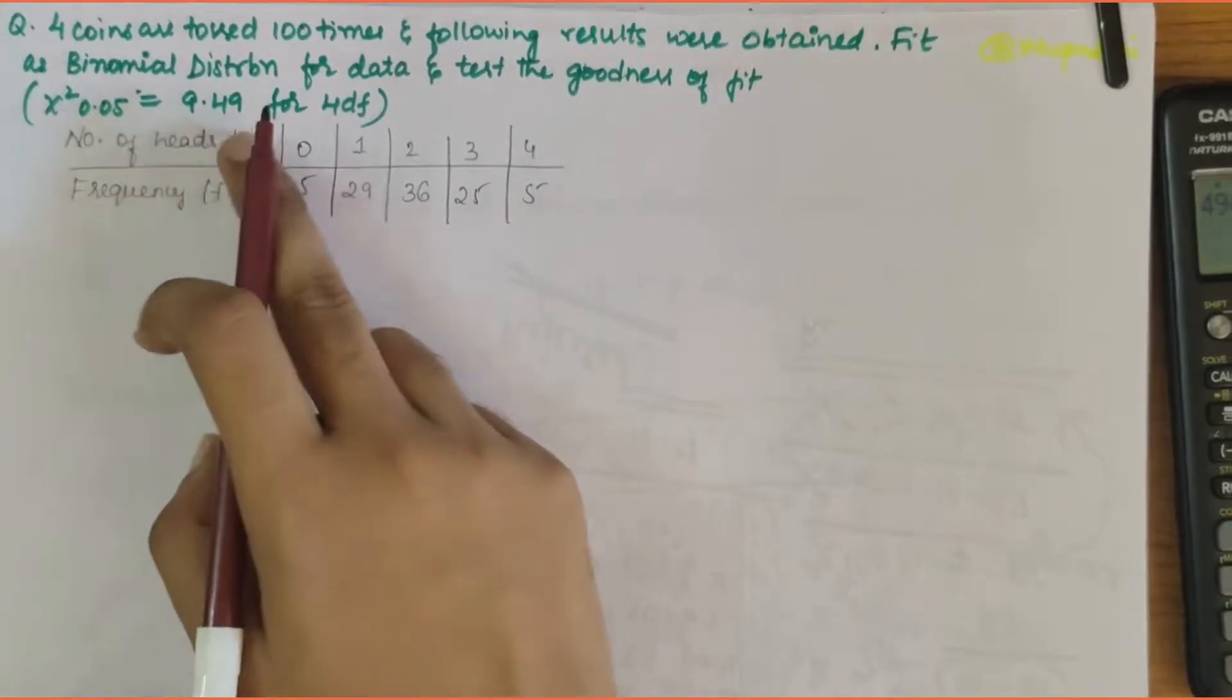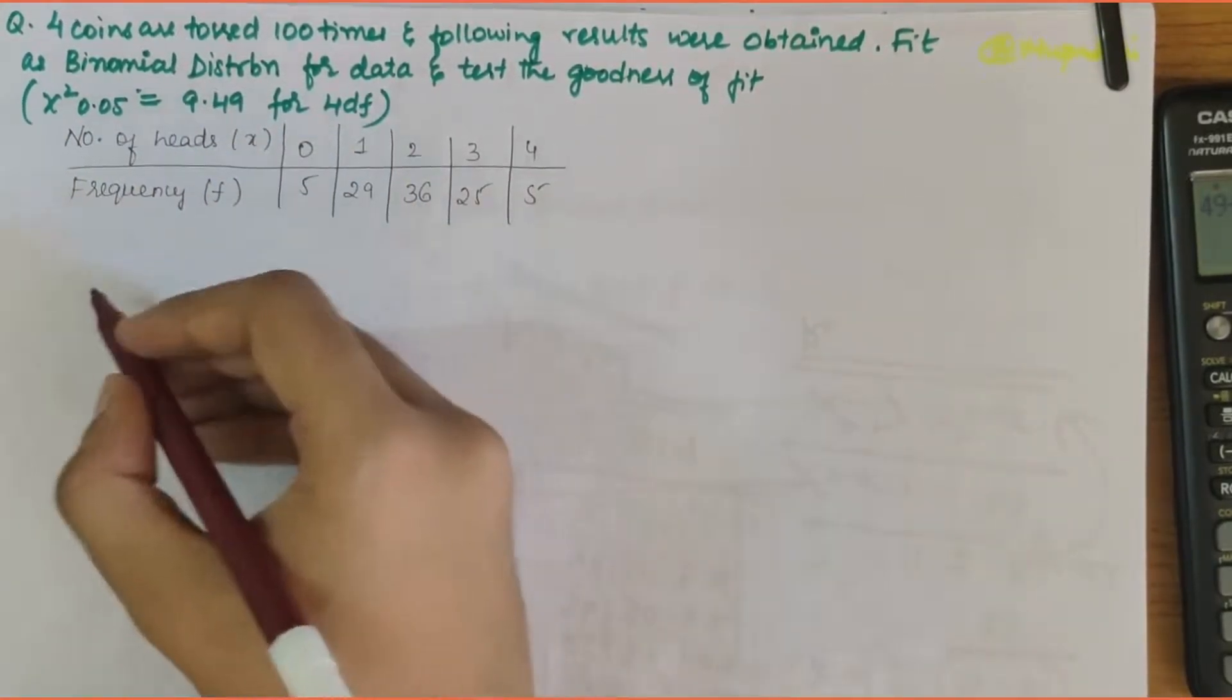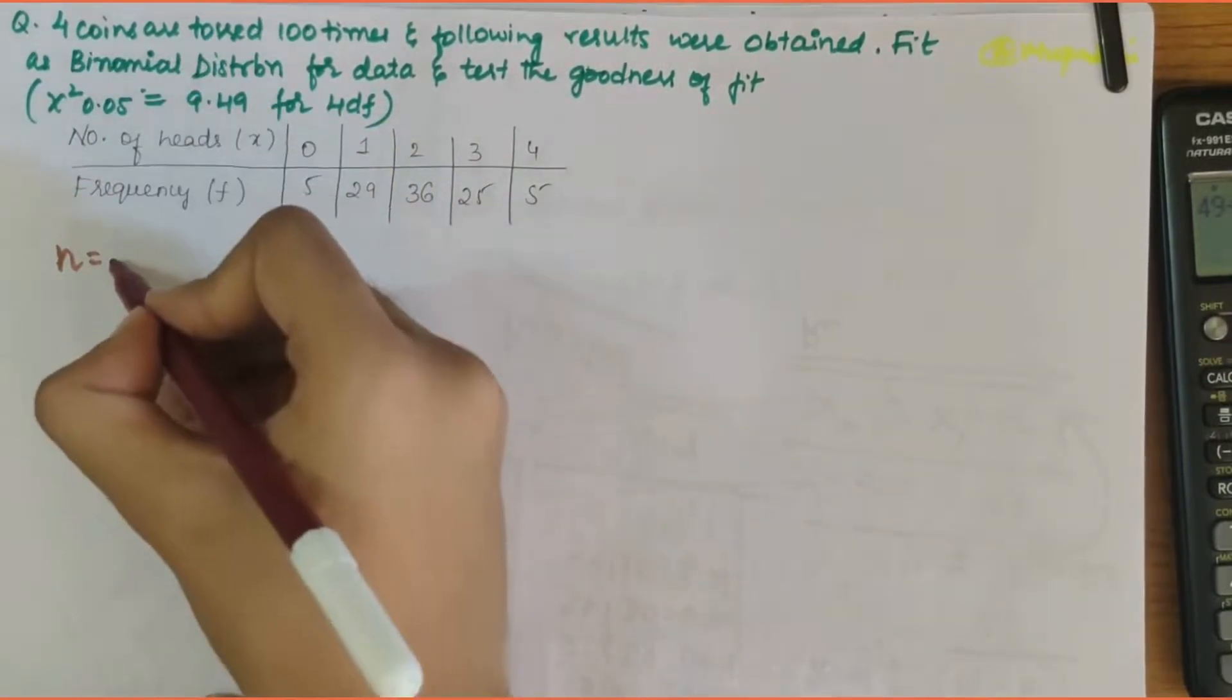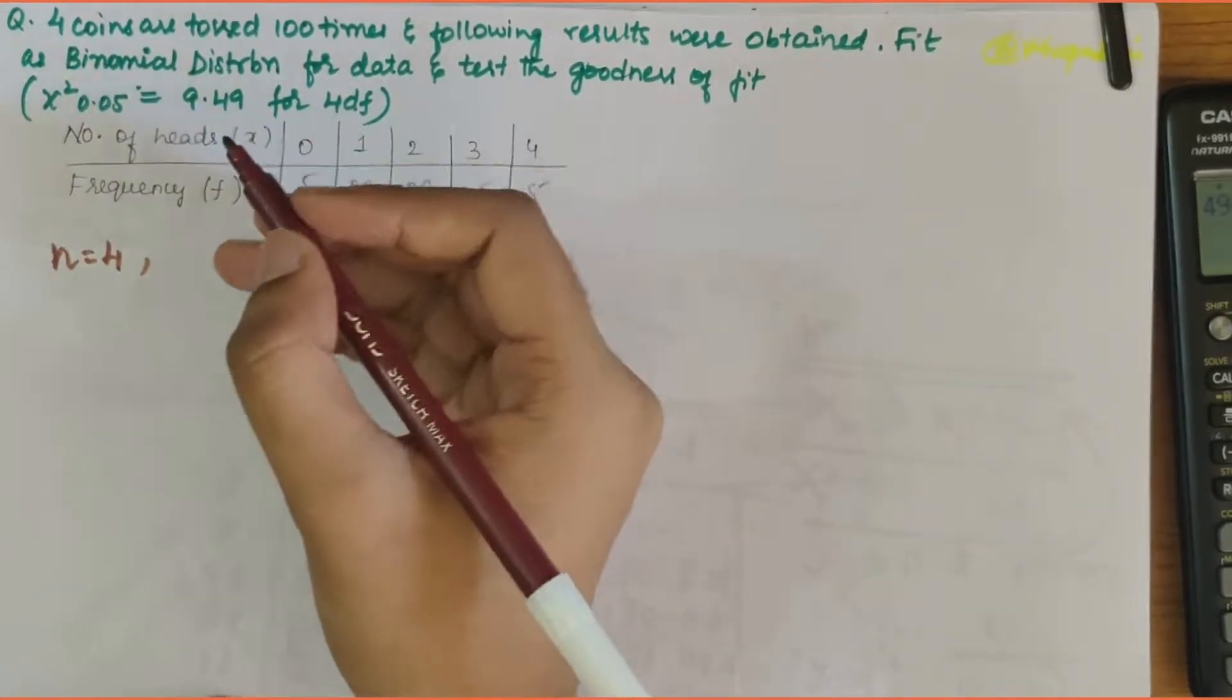Here chi-square of 0.05 is given as 9.49 for 4 degrees of freedom. These are the values which they have given. Now firstly let's write the n value, n is equal to 4 because 4 coins were taken.